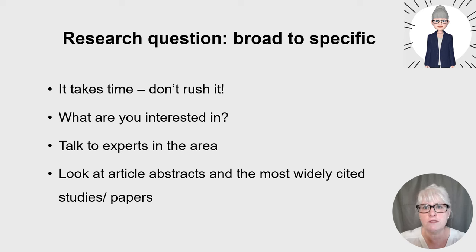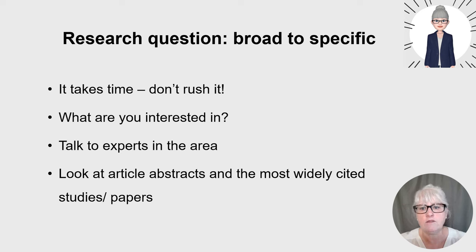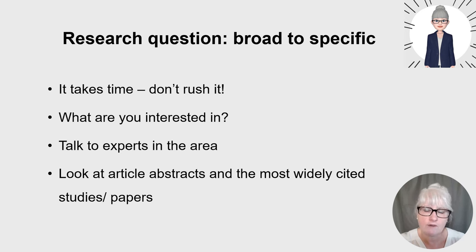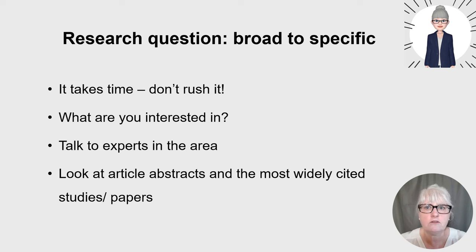At the start, it's helpful to look at abstracts and titles of articles and look at the most widely cited articles in the area. In Google Scholar, for example, you'll see how many studies have cited an article, which shows it's a key or seminal piece of work. You also need to think: is this research question feasible, or will I end up with too many or too few studies? Ideally you're looking at around six to fifteen empirical primary studies, but ask your university what they expect.